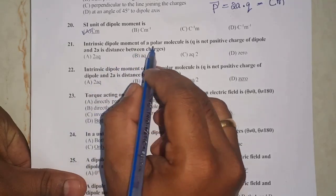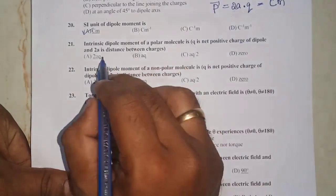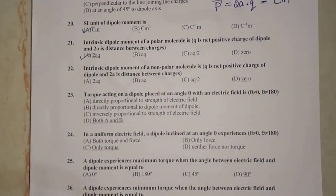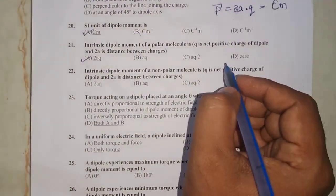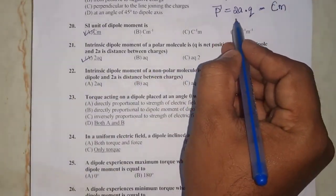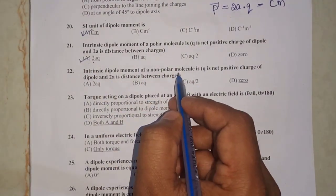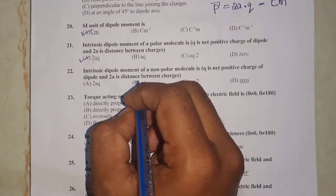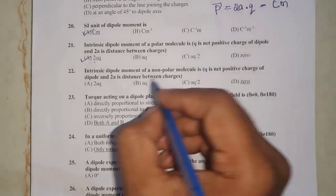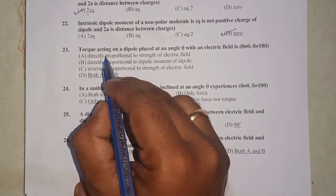Question number 20: the SI unit of dipole moment is coulomb meter, so option A is the correct answer. Question number 21: the intrinsic dipole moment of a polar molecule — in a polar molecule, the positive and negative poles are separated, and the dipole moment is given by 2a × q. For a non-polar molecule, the poles are not separated, so 2a = 0 and the dipole moment is zero.